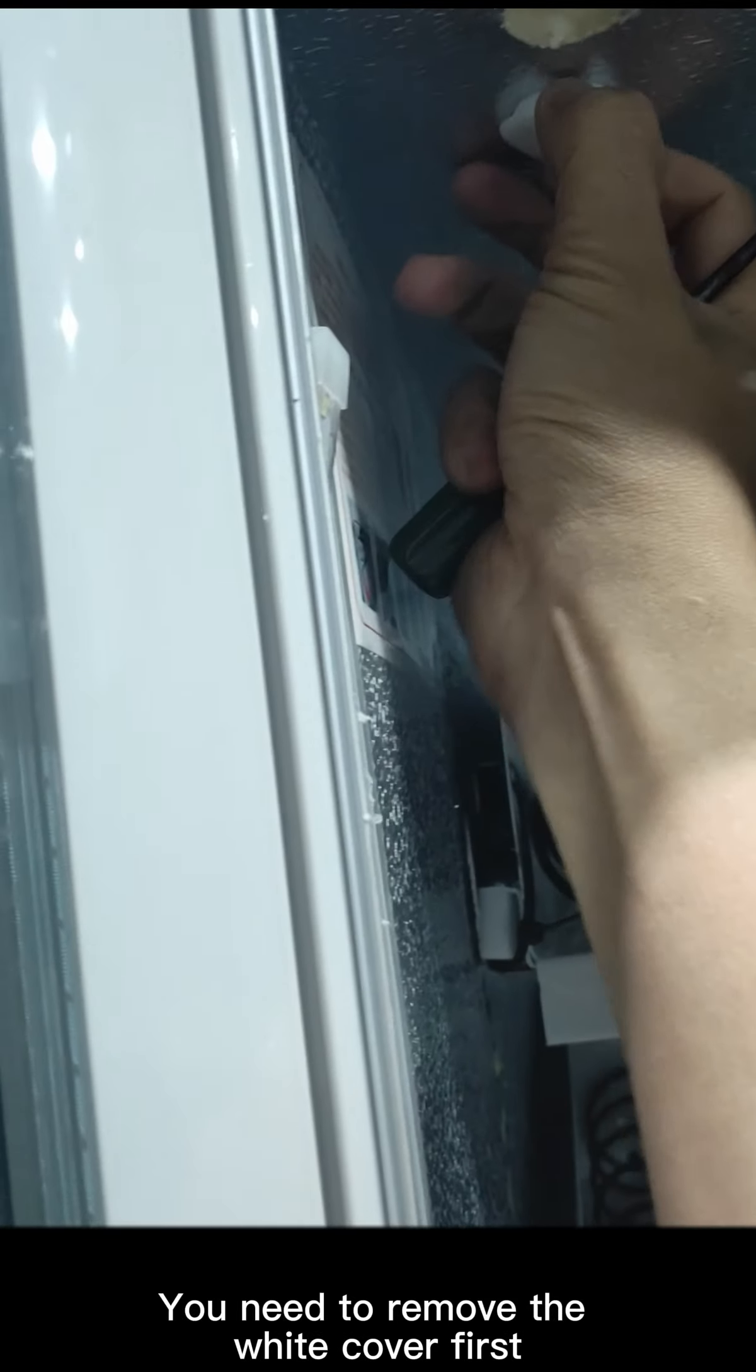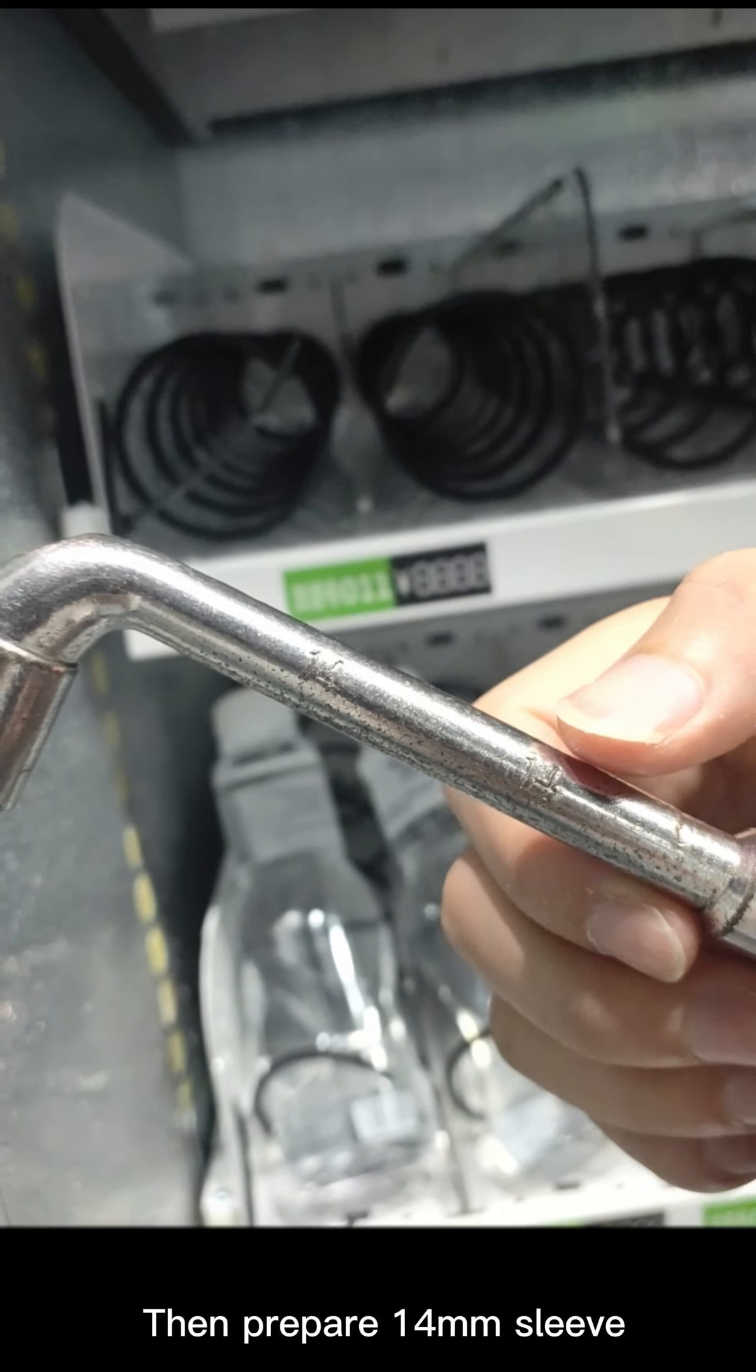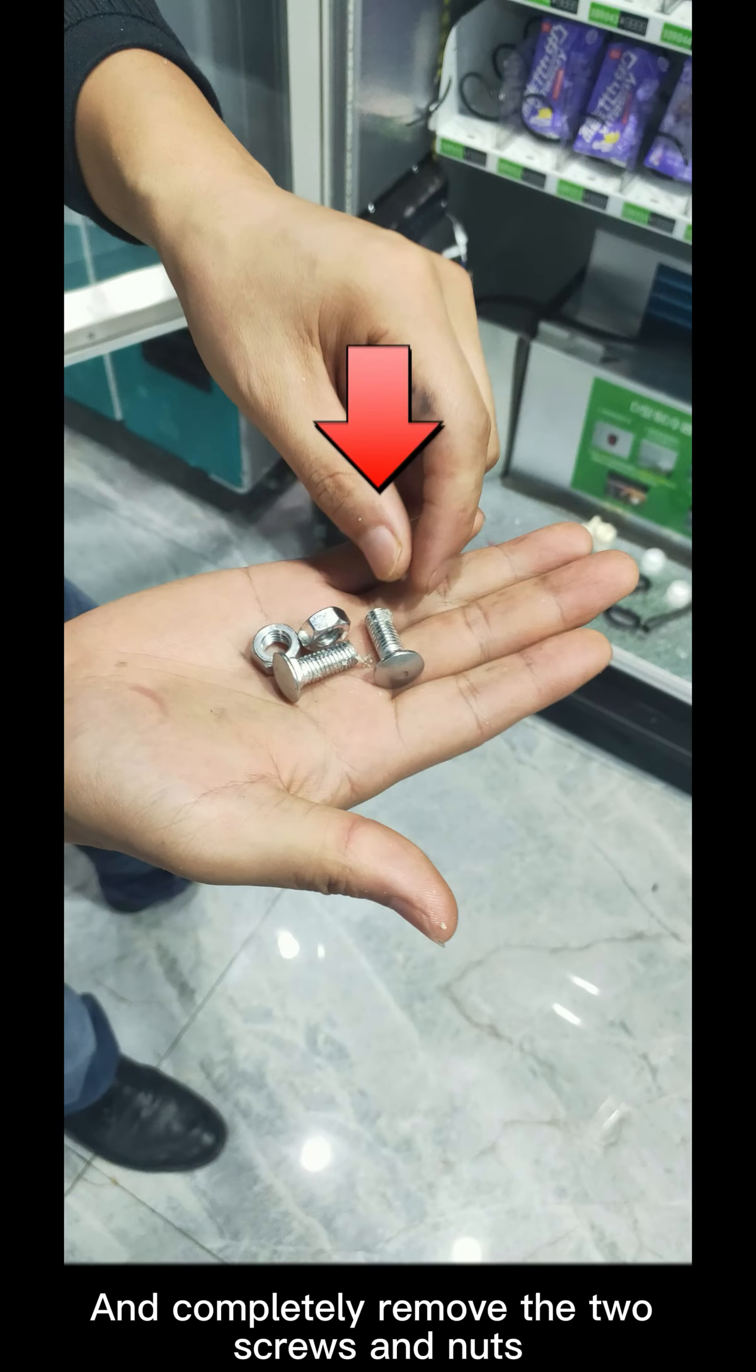Then, loosen the screw inside the machine first. You need to remove the white cover first, remove the foam inside, then prepare a 14mm sleeve and completely remove the two screws and nuts.